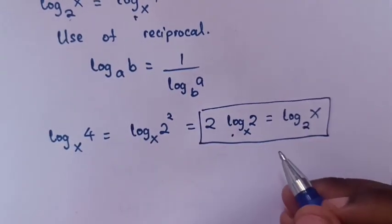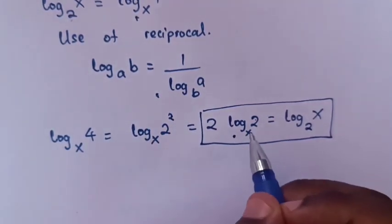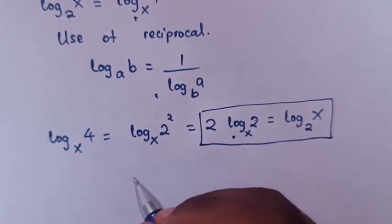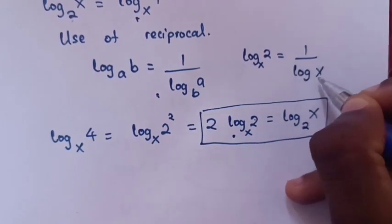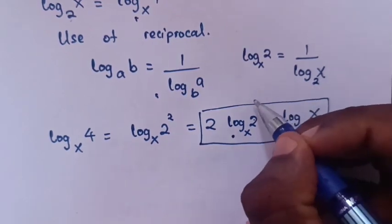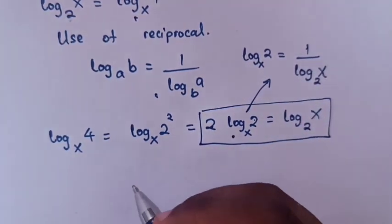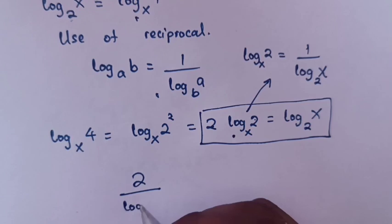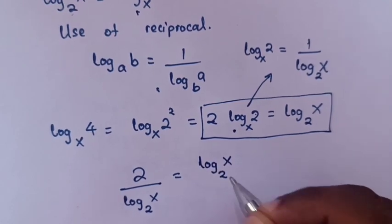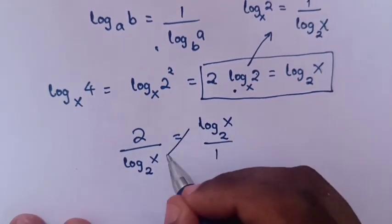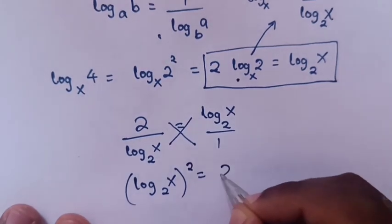The reciprocal of log 2 base x is 1 over log x base 2. Multiplying by 2, we get 2 over log x base 2. Since log 4 base x equals log x base 2, we have 2 over log x base 2 equals log x base 2. Cross multiplying gives (log x base 2) squared equals 2.